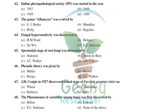The Indian Phytopathological Society was started on February 28, 1947, and came into full working from 1948. The genus Allomyces was created by E.J. Butler.